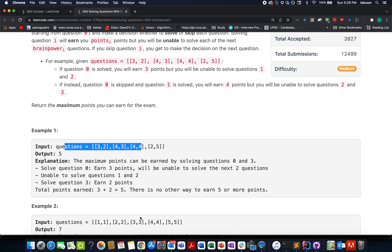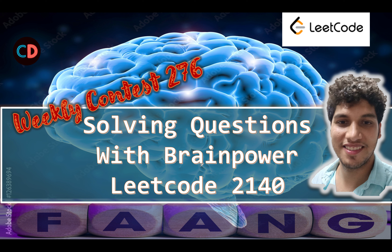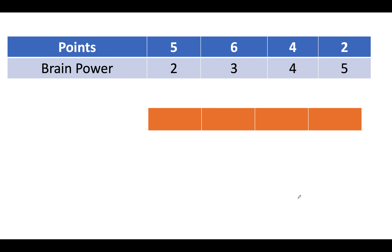I'll explain the approach on the whiteboard. This is LeetCode 2140, Solving Questions with Brain Power, a medium level question — and I totally feel the same. I've taken a slightly different example because the original examples didn't cover all the test cases. I've modified a few values, so let's analyze the algorithm using this one.